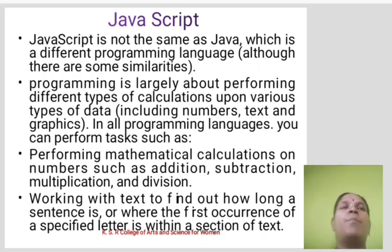Programming is largely about performing different types of calculations upon various types of data, including numbers, text, and graphics. In all programming languages, you can perform tasks such as performing mathematical calculations on numbers such as addition, subtraction, multiplication, and division.